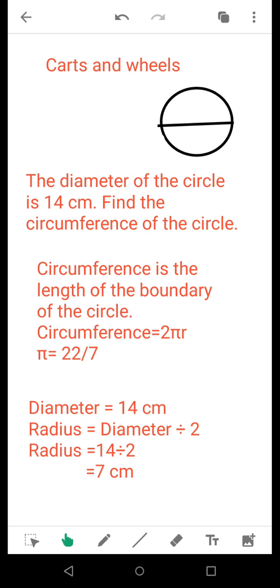First, I have defined circumference as the length of the boundary of the circle. In simple terms, you can say perimeter of the circle. Circumference equals 2πr, and the value of π is 22/7. It's an improper fraction having value 22/7.